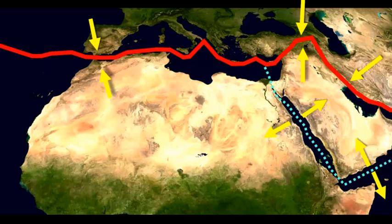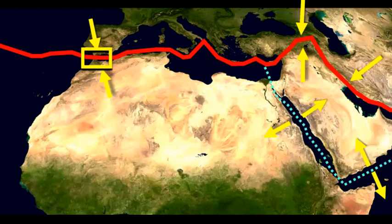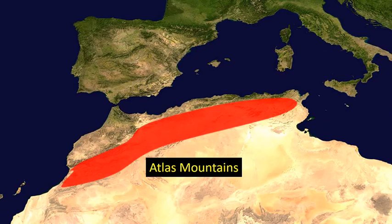Looking at the plate boundaries: the solid red line represents a convergent plate boundary. The teal dashed line in the Red Sea area represents a divergent plate boundary — that's where plate separation is occurring, further emphasized by yellow arrows. Now let's look at some plate tectonic collisions, starting with the Atlas Mountains, where we have the Eurasian plate colliding with the African plate. Along that plate boundary, running parallel to that red line, is the Atlas Mountains.